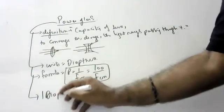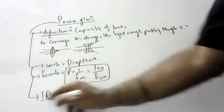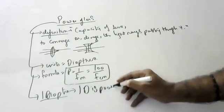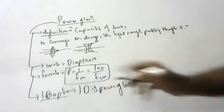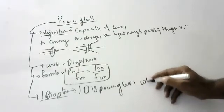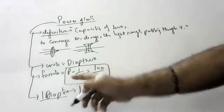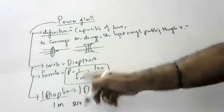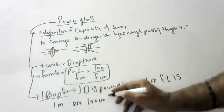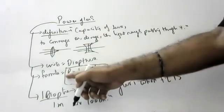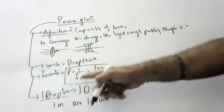Very important question: define the unit of power, that is, define one diopter. One diopter is the power of a lens whose focal length is 1 meter, because 1/1 = 1, or 100 centimeters, because 100/100 = 1. So one diopter is the power of a lens whose focal length is 1 meter or 100 centimeters.